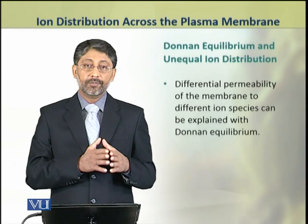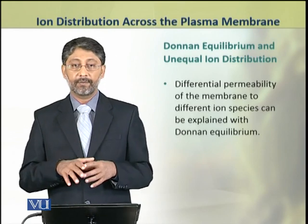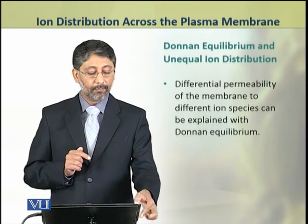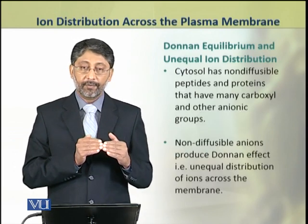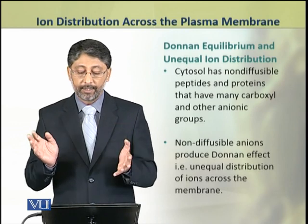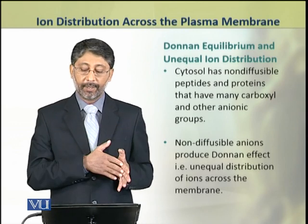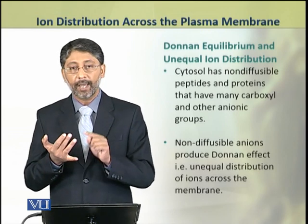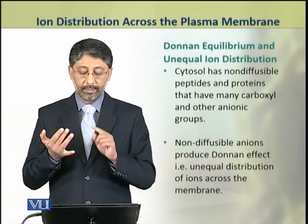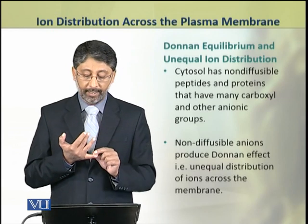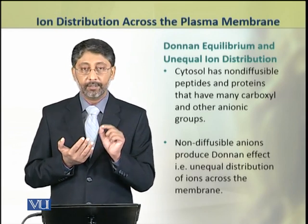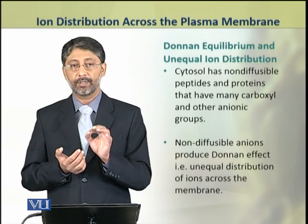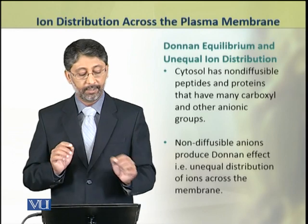The unequal distribution of ions has a basis in the Donnan effect and Donnan equilibrium. The cytosol has many non-diffusable peptides and proteins that have carboxyl and other anionic groups. Due to these anions, the Donnan effect is produced, which results in unequal distribution of ions across the plasma membrane.